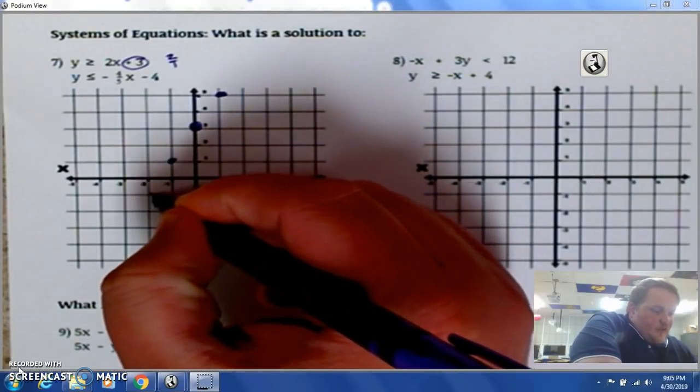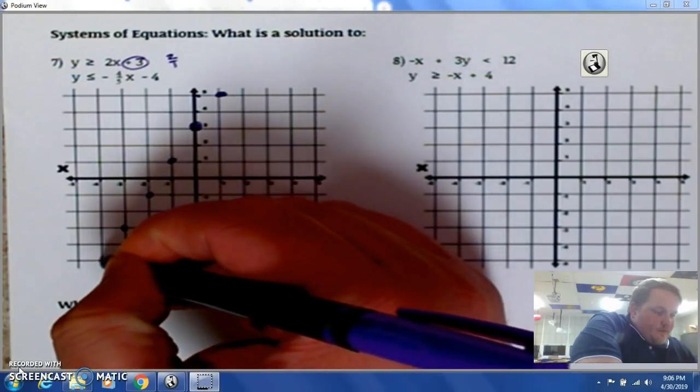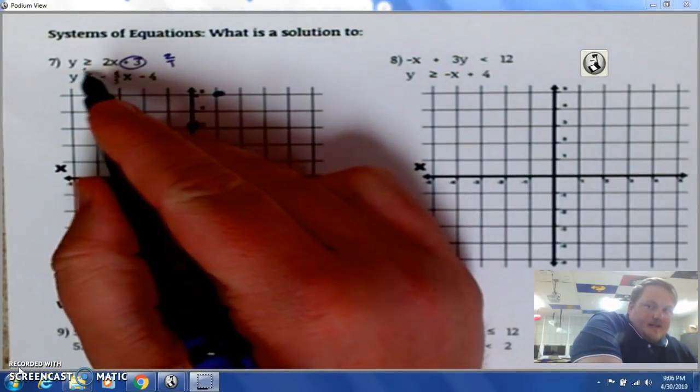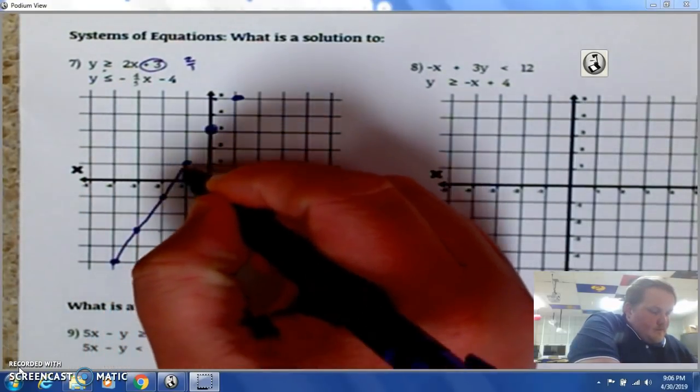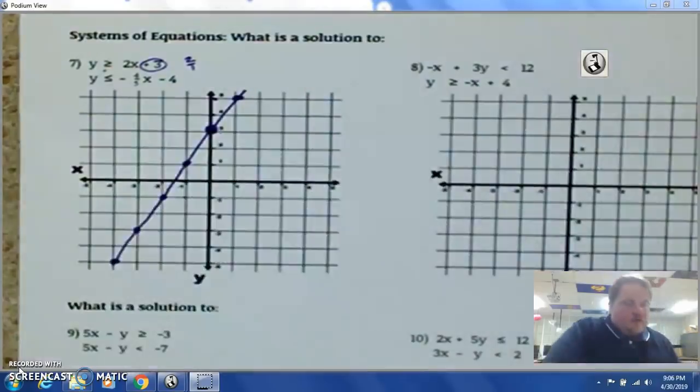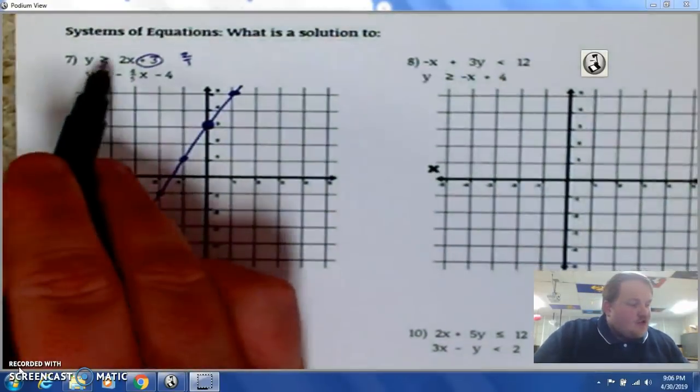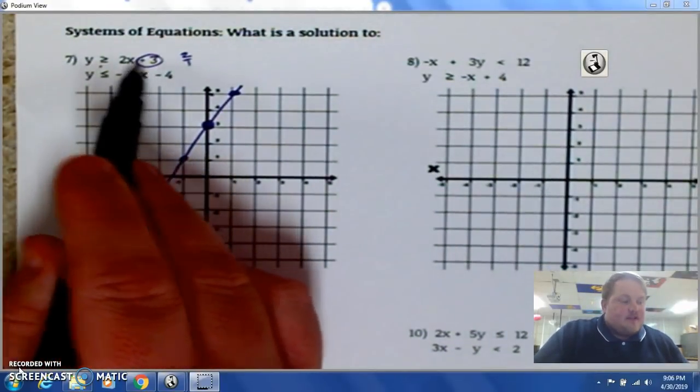Down 2. And, over 1. And, so forth. Since the line is solid underneath. I make a solid line.